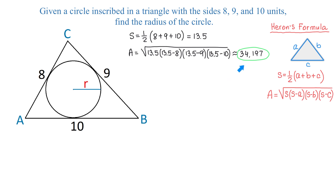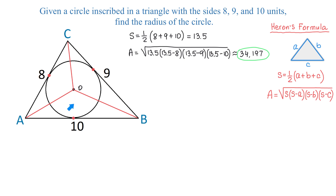Now we have the area of the triangle. To form an equation and find the radius of the circle, in this figure we will need to connect a few points. Let the center of this circle be represented by letter O. We will connect point O with points A, B, and C. The sides of the triangle are tangent to this circle, and these are the points of tangency. If we connect the center of the circle with each point of tangency, then each of these line segments will be perpendicular to each side of the triangle.